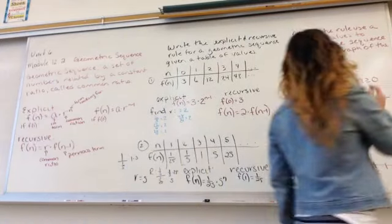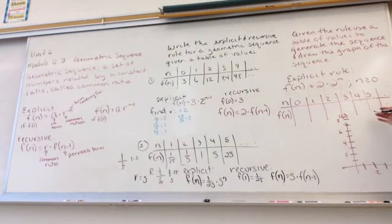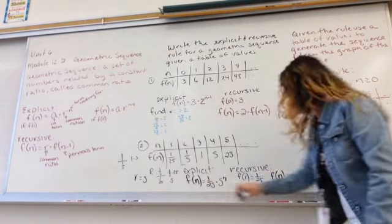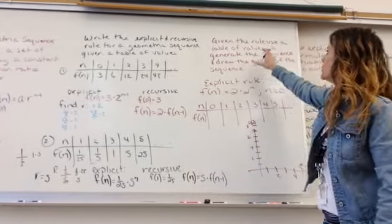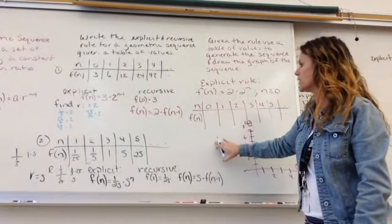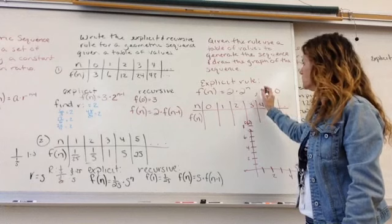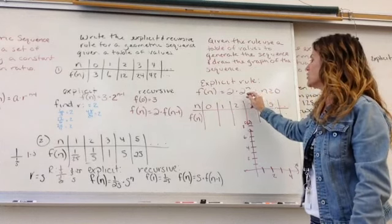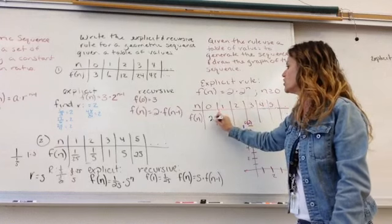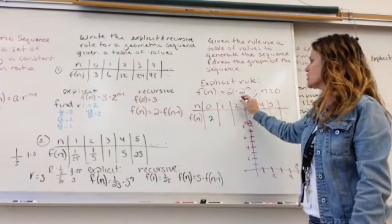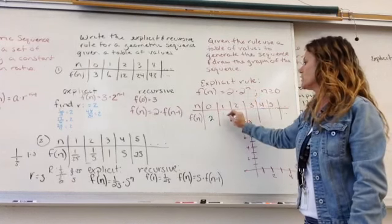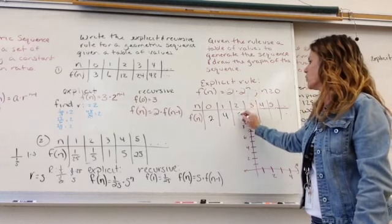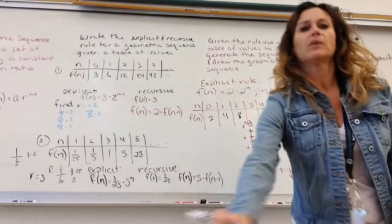We're also going to use the rule to find a table of values just like we did with arithmetic. So we are going to use this rule here to find our values. If I plug in 0, and they gave us the rule so we have to use it, 2 to the 0 is 1, so that's 2. 2 to the first is 2. 2 times 2 is 4. That's 4. That's 8.